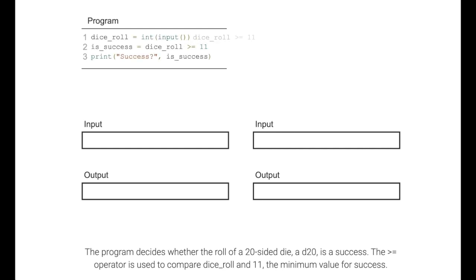The program decides whether the roll of a 20-sided die, a d20, is a success. The greater than or equal to operator is used to compare dice roll and 11, the minimum value for success.